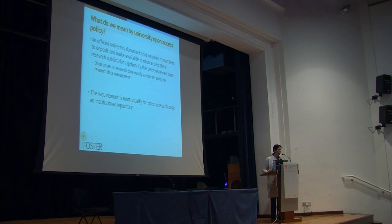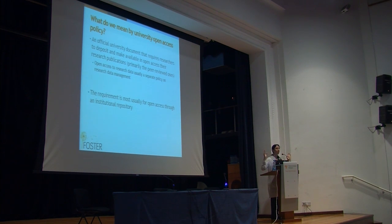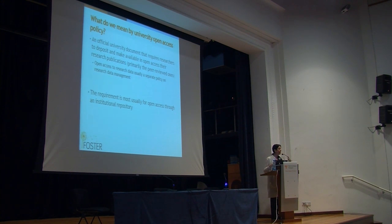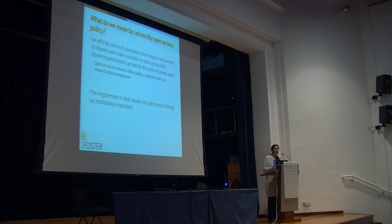I should tell you that a university open access policy is a different thing from the repository policy, and I'm making a special point here because a lot of times librarians tend to merge the two things. The university open access policy is the general blanket document that requires researchers to deposit and make open access through the repository, whereas the repository policy regulates what goes up on the repository, how it is managed, how it is disseminated, retention schedules, how you can pull it up or down — things like that. The repository policy comes with the repository and regulates its function. This is a higher-level policy we're talking about.